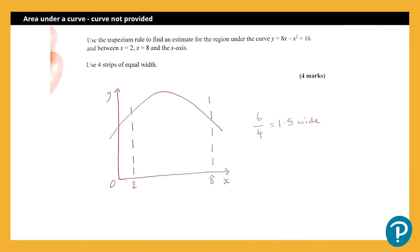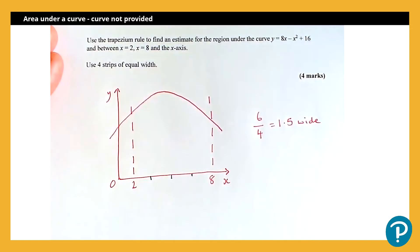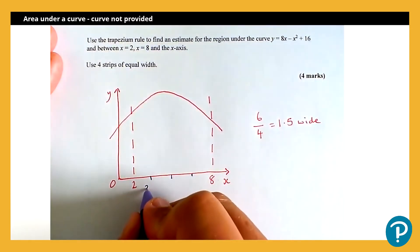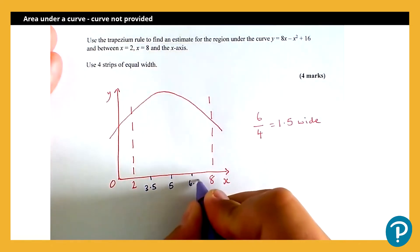Okay, so if I now then put in these values, it's going to be four equal strips. So we're going up in 1.5. So this one here will be 3.5, 5, and 6.5.